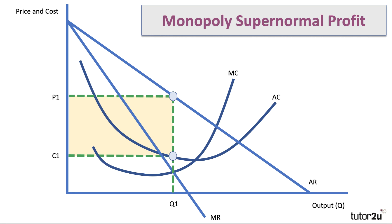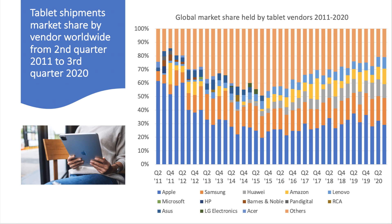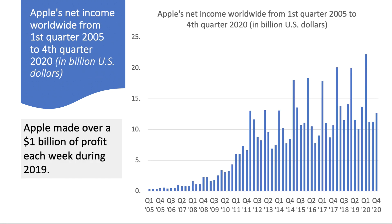Here's our classic diagram — the monopoly diagram — showing a business with market power able to profit maximize and earn a hefty super-normal profit, price above average cost, price above normal profits. We mentioned in the past some examples of businesses with sizable market share. Apple has a 29% share of the global tablet market — it's a good example of a working monopoly — with Apple, Samsung, and to a lesser extent Huawei and Microsoft dominating the tablet market.